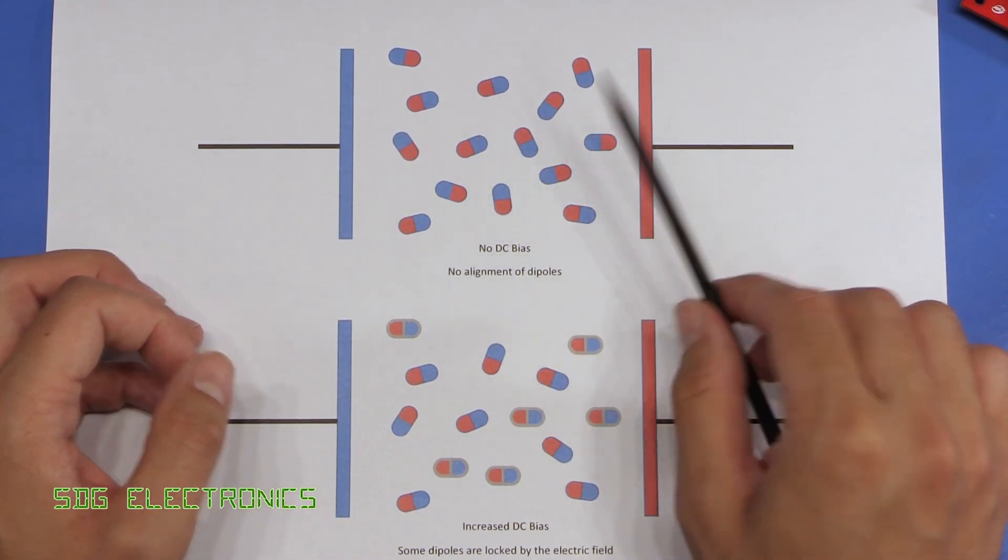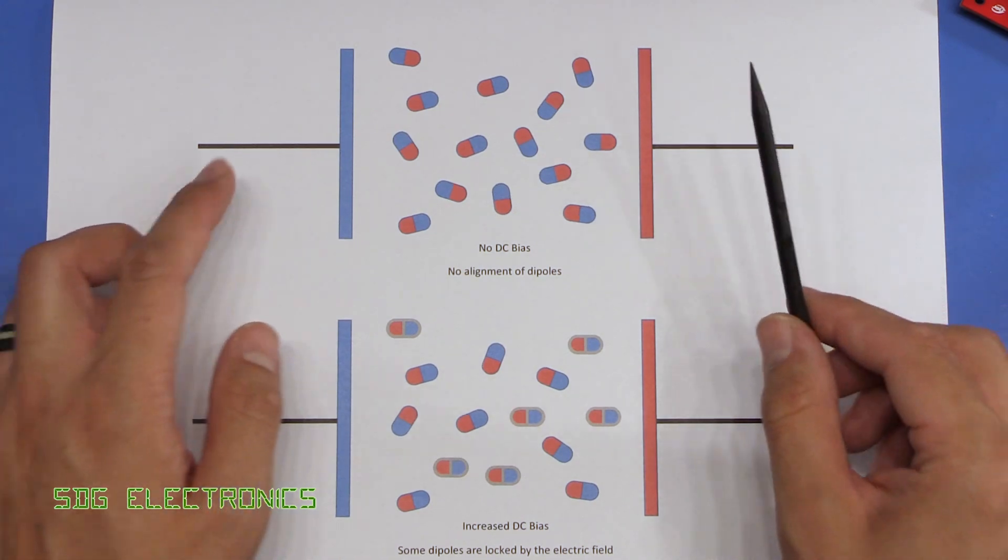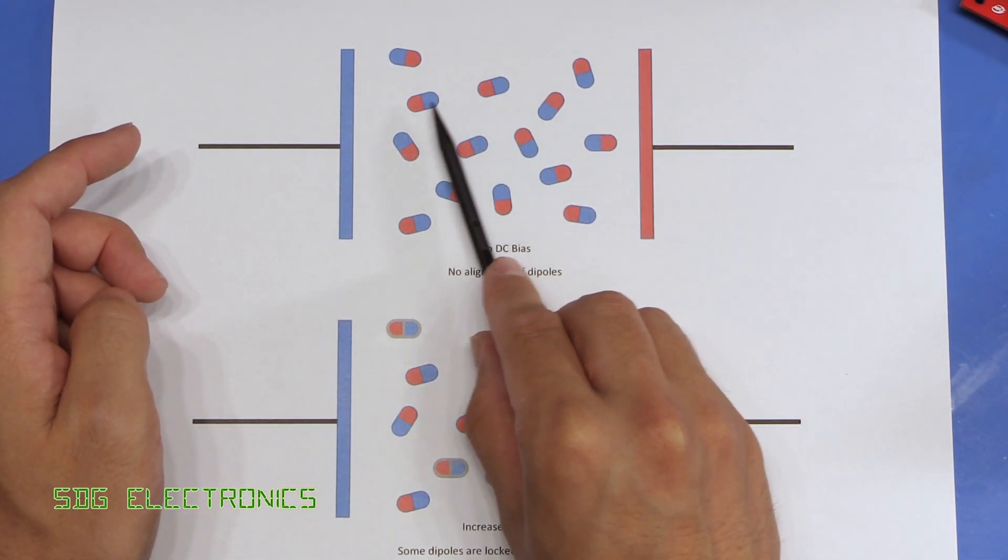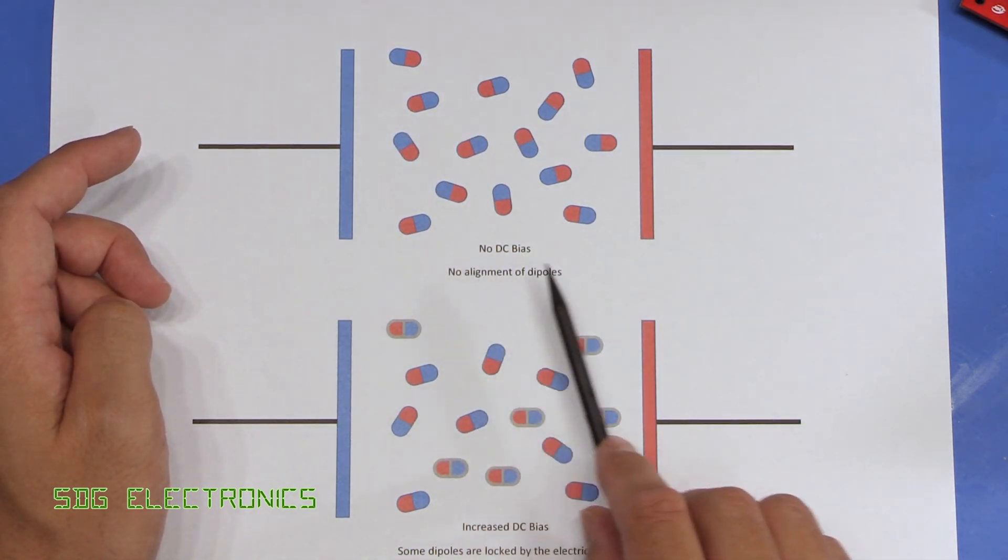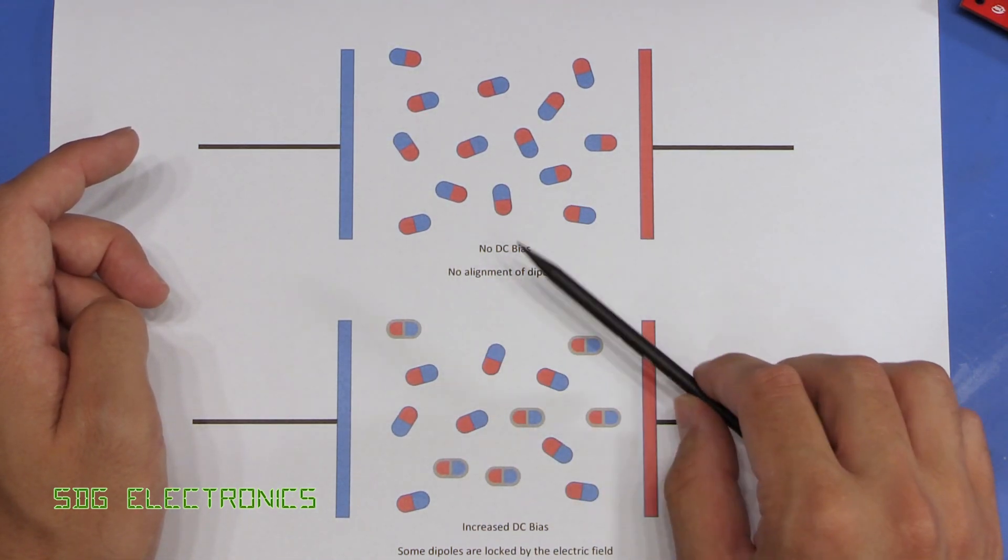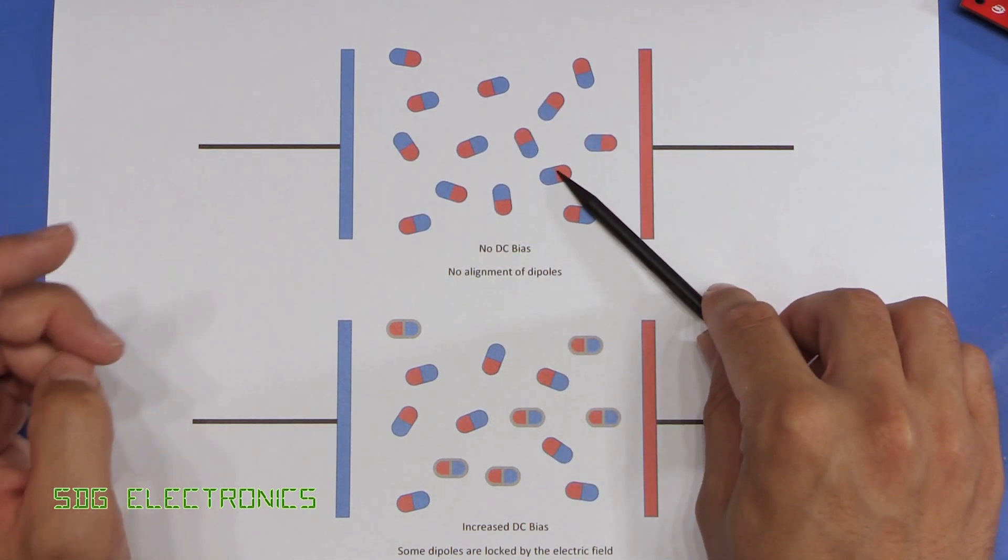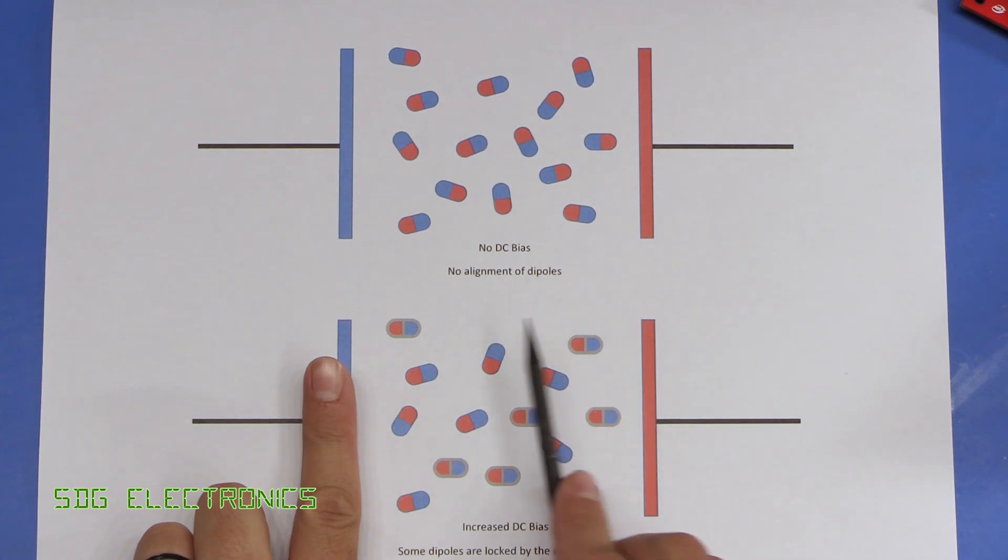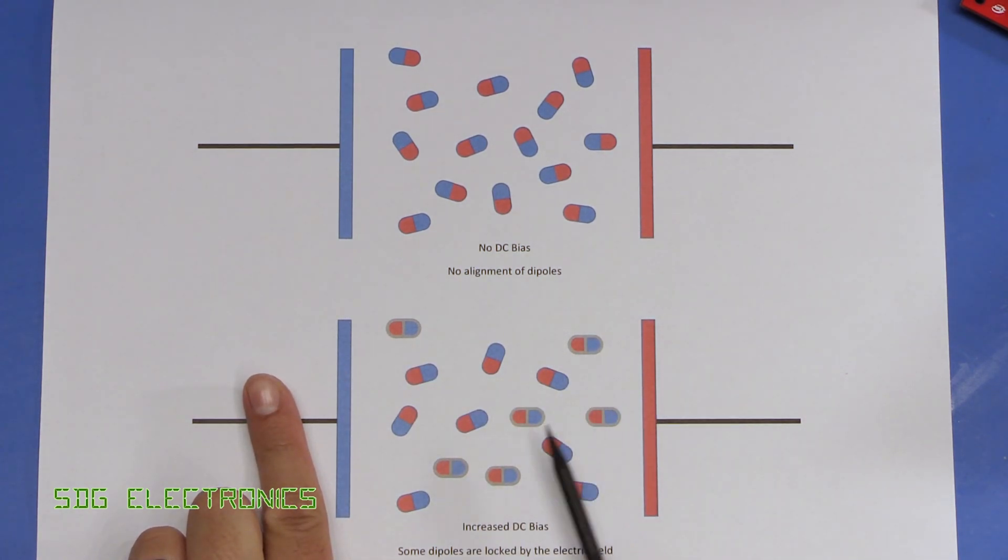So with no DC bias on these plates, all of these dipoles are free to rotate and that gives us the highest capacitance because the dielectric constant is at its maximum. Once we apply a DC bias to these plates, some of the dipoles start to become locked in position and they're no longer free to move. That means that we've got a lower dielectric constant and therefore the capacitance is decreased.